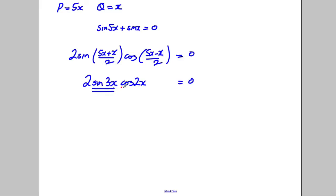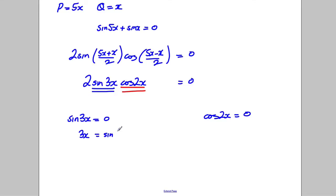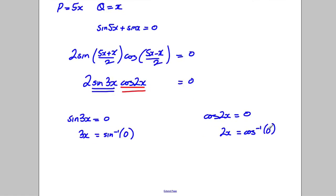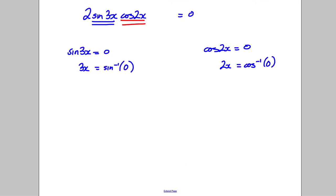So our solutions are when sine(3X) equals zero and when cosine(2X) equals zero. So 3X must be inverse sine of zero, and 2X must be inverse cosine of zero. We're looking in terms of pi, between 0 and pi, so I'm going to draw a graph for these.